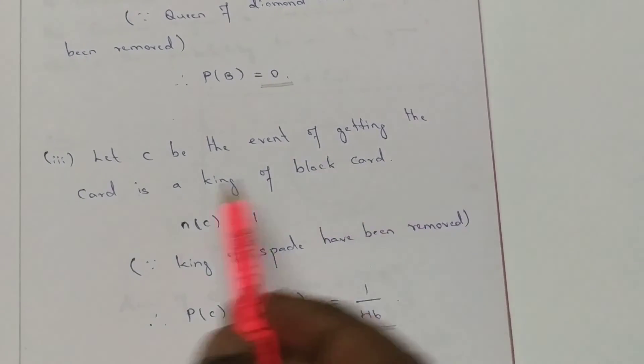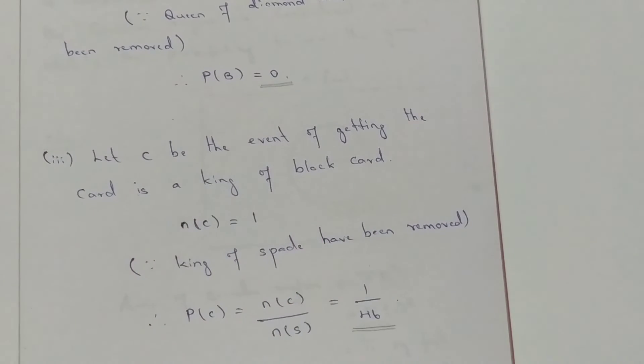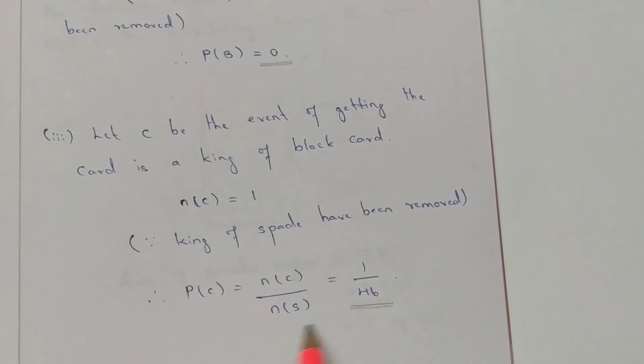Let C be the event of getting a King of black card. One King, Spade King, is removed, so Club King remains. n(C) equals 1, because King of Spade has been removed. Therefore, probability of C equals n(C) divided by n(S), which is 1 by 46.